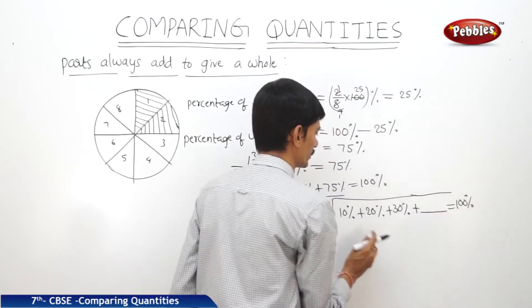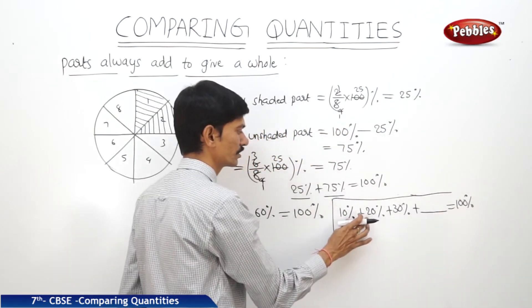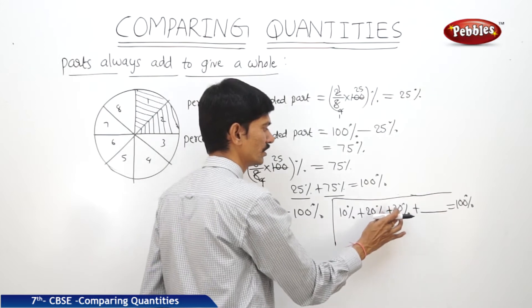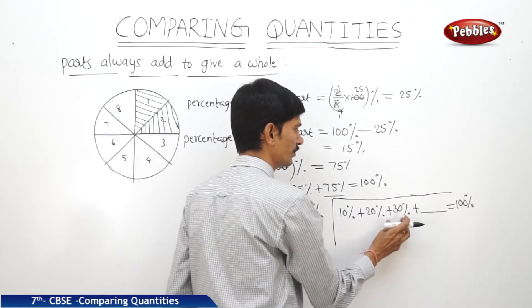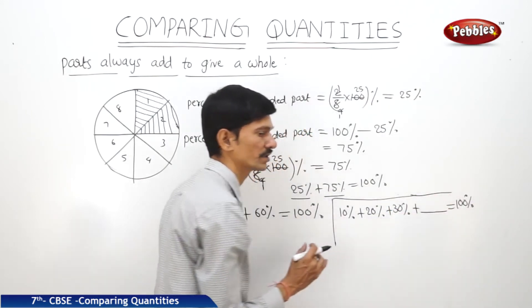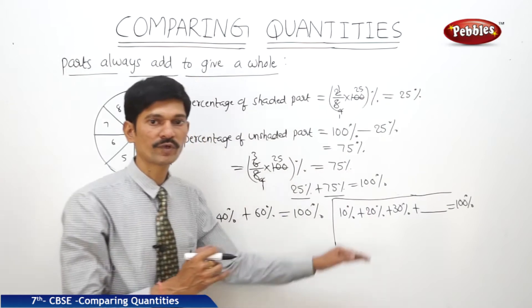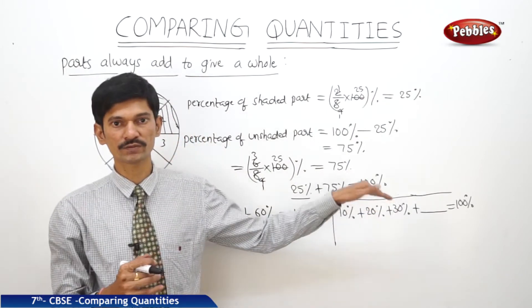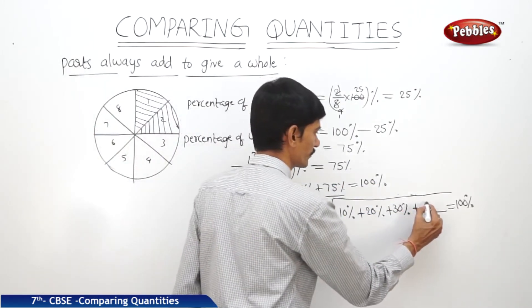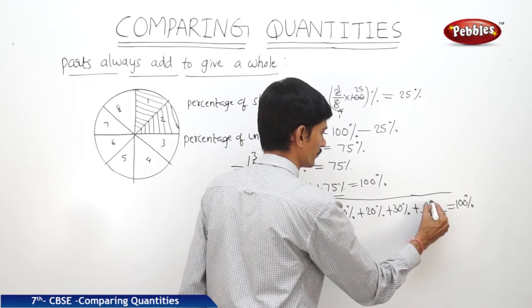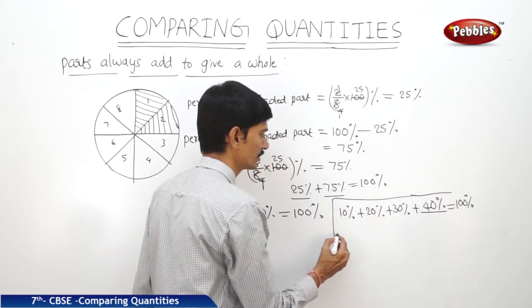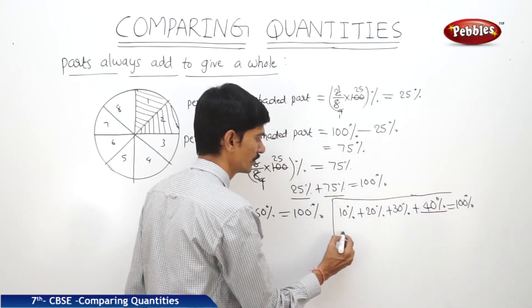What is the blank? 10 plus 20 is 30, and 30 plus 30 is 60. So 60% plus what equals 100%? Obviously, it is 40%. We can fill the blank with 40%.